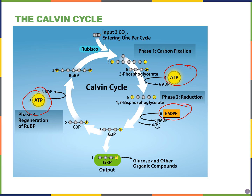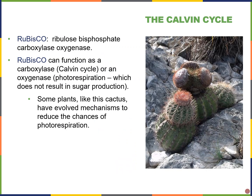Rubisco stands for ribulose bisphosphate carboxylase oxygenase — you don't have to know what it stands for, everyone calls it rubisco. The nice thing is it can fix carbon, acting as a carboxylase for the Calvin cycle. Unfortunately, rubisco also binds to oxygen and can act as an oxygenase, which occurs during photorespiration.